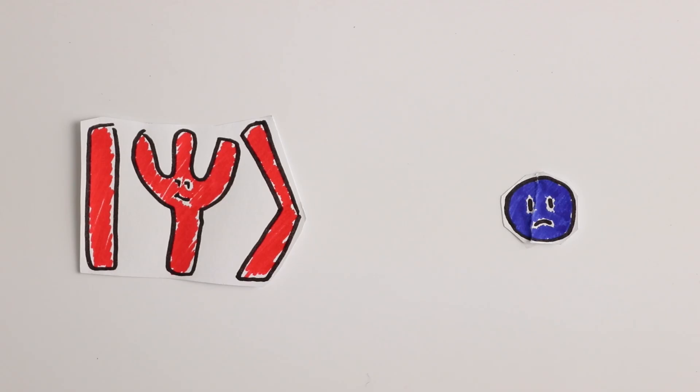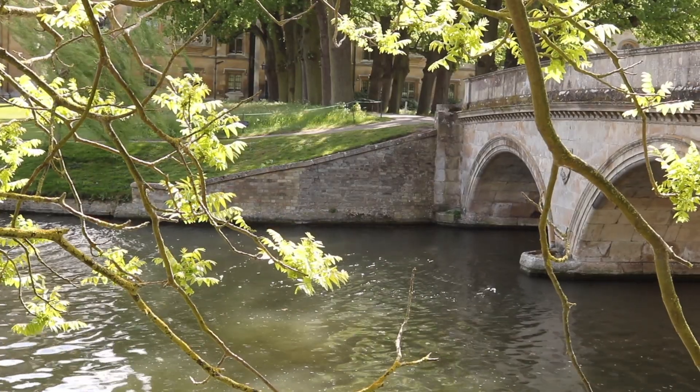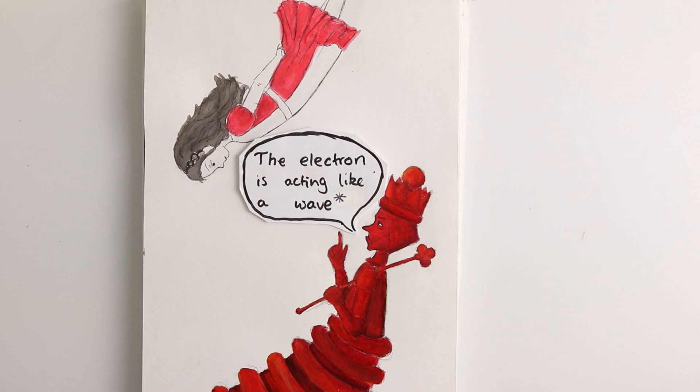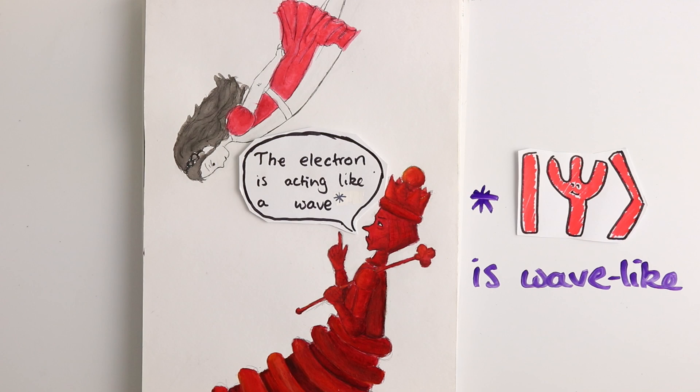But it's important to remember that the wave function isn't the electron itself, and it's not a physical wave. When a physicist says that an electron is acting like a wave in an experiment, what they mean is that the wave function looks wave-like.